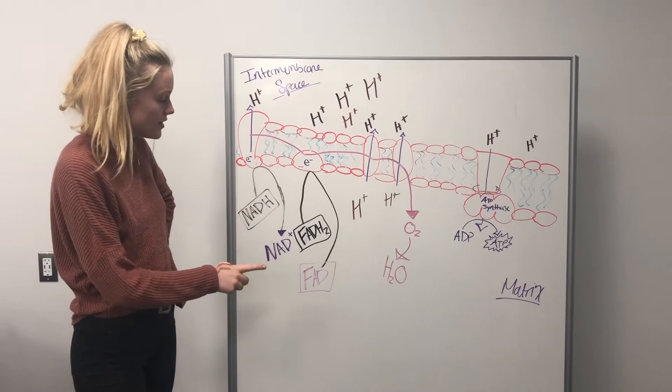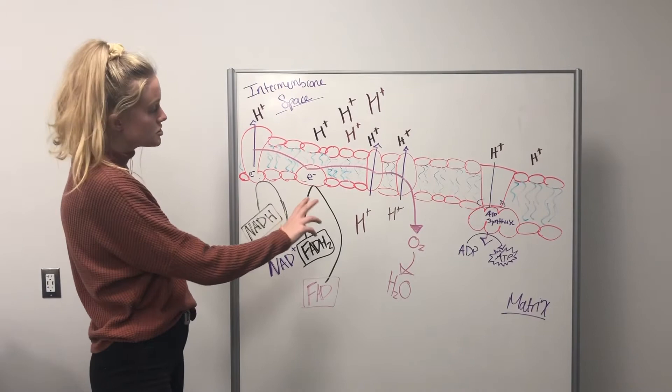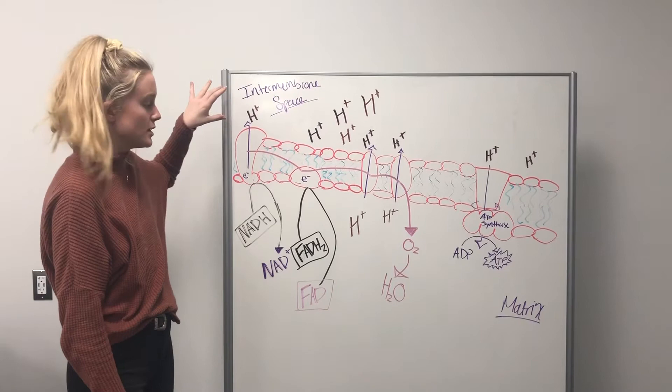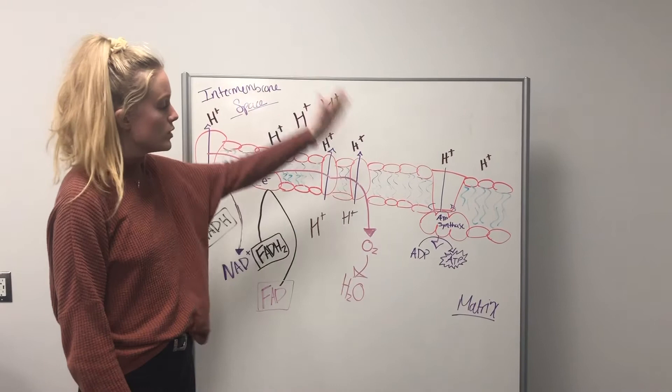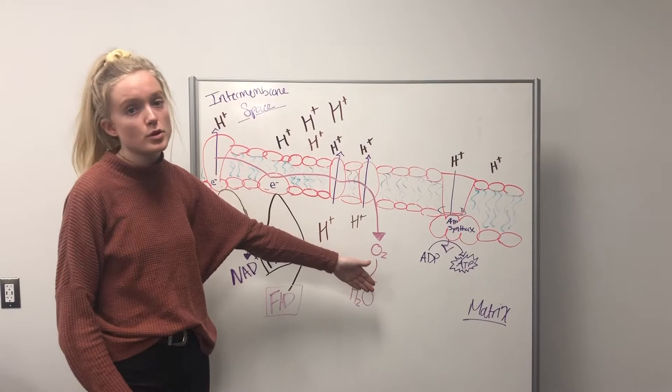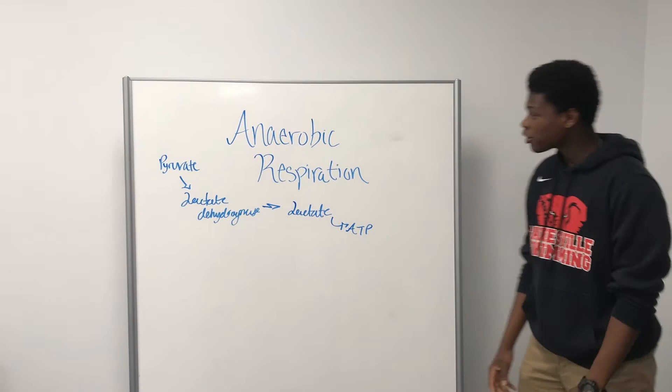NADH and FADH2 come from the citric acid cycle and release their electrons, which move down the electron transport chain. As they do this, protons are pumped against the gradient and across the membrane, where they accumulate in the intermembrane space. As the electrons move down the ETC, they reunite with oxygen gas and H+ to produce water. We reap the benefits over here, producing roughly 36 ATP per glucose.